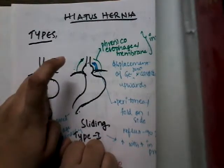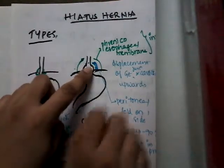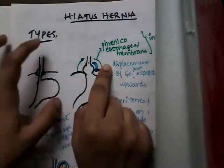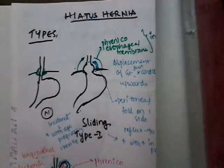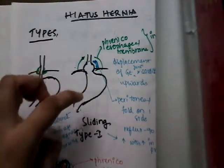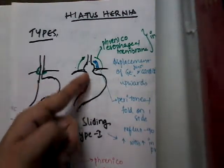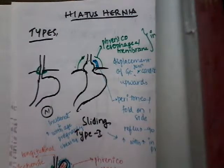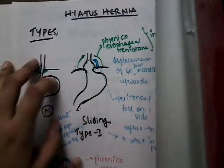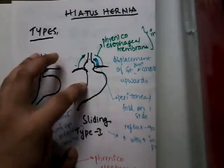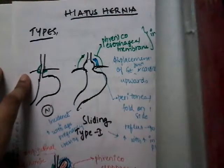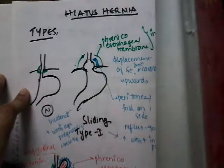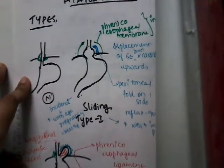In sliding hernia, the phrenicoesophageal ligament remains intact and a peritoneal fold can be seen on one side. Sliding type hiatus hernia is associated with gastroesophageal reflux disease in almost 90% of cases. The incidence increases with age, pregnancy, obesity, increased abdominal pressure such as coughing, and in the supine position.